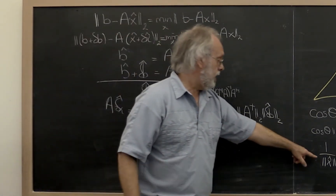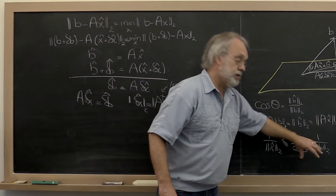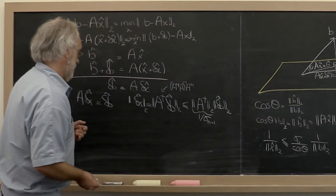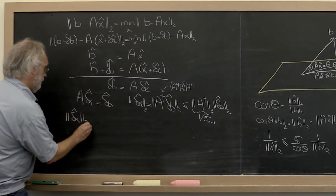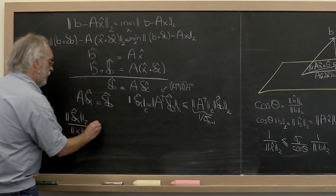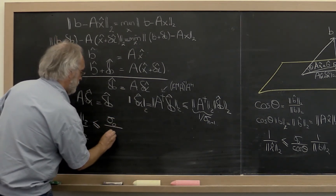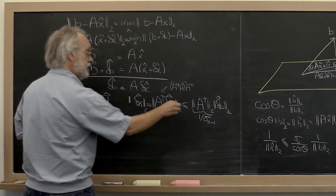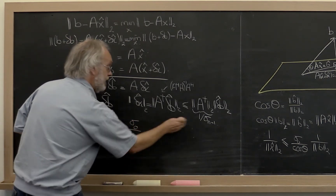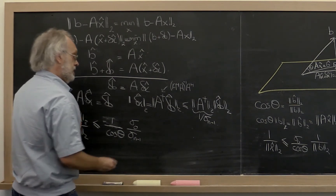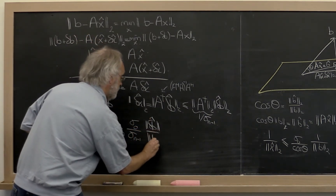Putting all of that together, since all these quantities are positive, we know that combining both bounds gives us: the change in the solution relative to the size of the solution, all in 2-norm, is bounded by (σ₀ / cosine(θ)) · (1/σ_{n-1}) times the change in b after projection divided by the change in b in 2-norm.